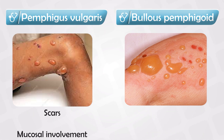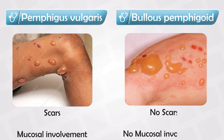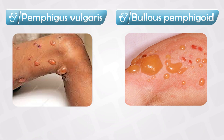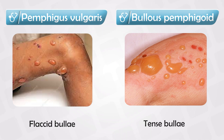In Pemphigus vulgaris we do have scars, whereas in Bullous pemphigoid we do not. In Pemphigus vulgaris there is extensive mucosal involvement, while in Bullous pemphigoid there is none. In Pemphigus vulgaris the bulla is very flaccid and can easily break off, whereas in Bullous pemphigoid the bulla is very tense.